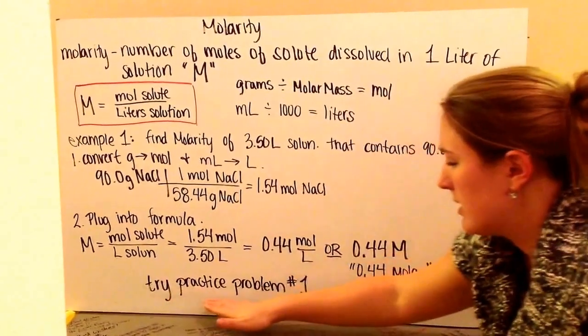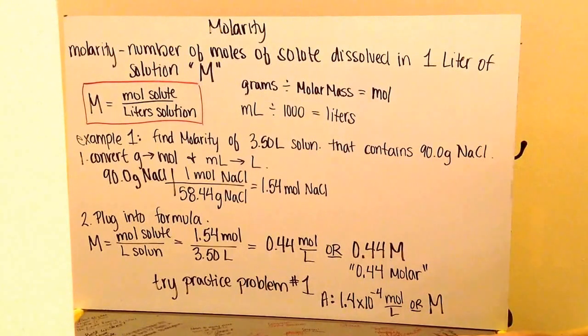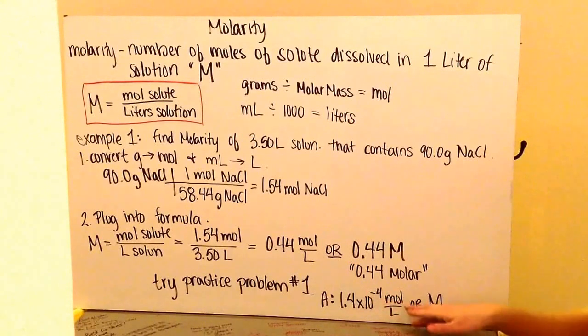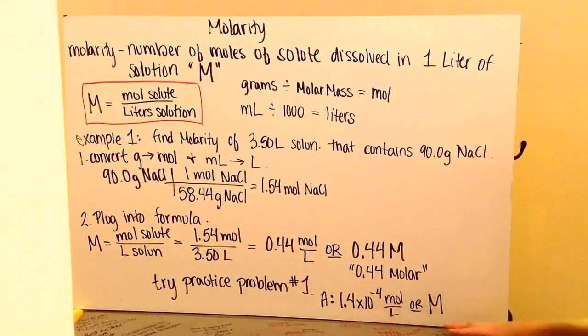Next, try practice problem number 1. You should get the answer of 1.4 times 10 to the negative 4th moles per liter, or you can use the units of 1.4 times 10 to the negative 4th molar.